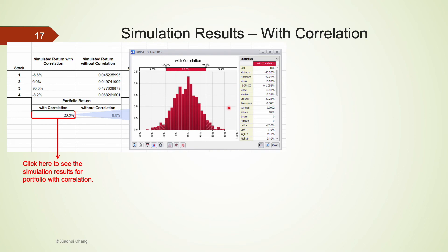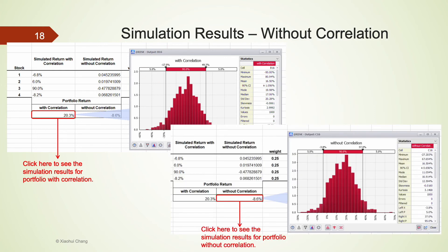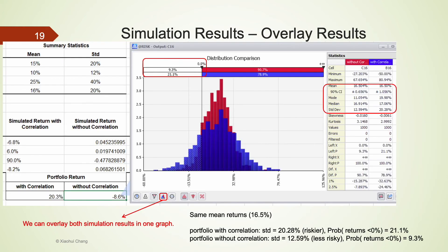To see the results from the portfolio with correlation, we can click on cell B16 and this graph will pop up. And to see the results from the portfolio without correlation, we can click on cell C16 and these results will pop up. We can also overlay both simulation results in one graph by clicking on the overlay button on the very bottom. Let's take a look at the summary statistics.